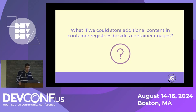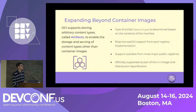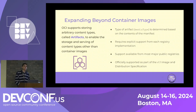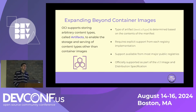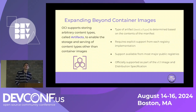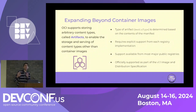We've used container images for about a decade — but wouldn't it be nice to store additional content types in container registries, aside from container images? It's possible. There's a concept called OCI Artifacts. How many have heard of OCI Artifacts before today? The type of artifact — i.e., the media type — is determined based on the contents of the manifest.